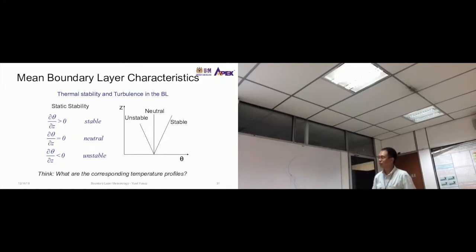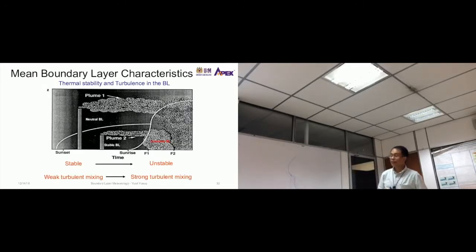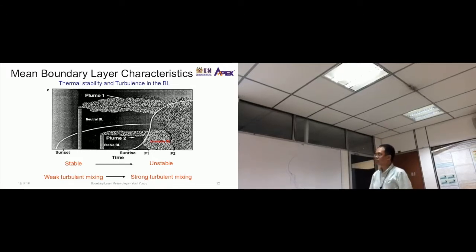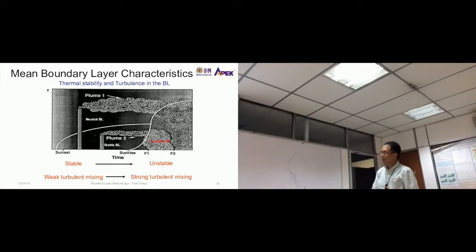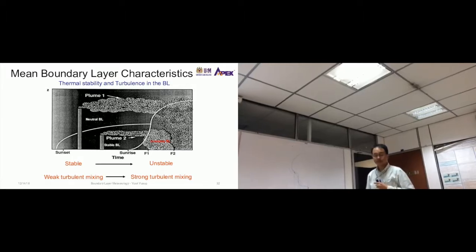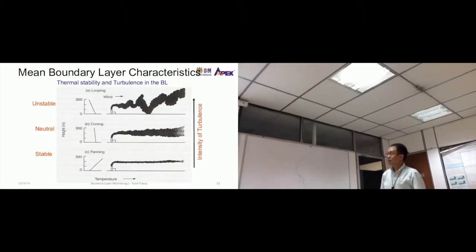This is the effect of the stability on the dispersion of the plume. Stable to unstable. If stable, you notice it doesn't spread out so much. When it reaches into unstable conditions somewhere here, it starts to be well mixed in the atmosphere. In stable there's weak turbulent mixing, but in unstable conditions, strong turbulent mixing.